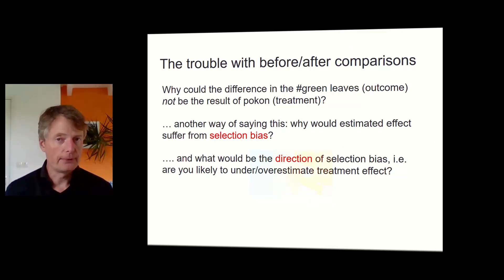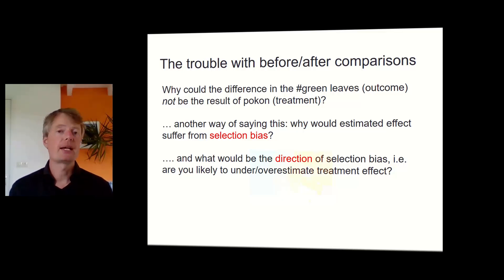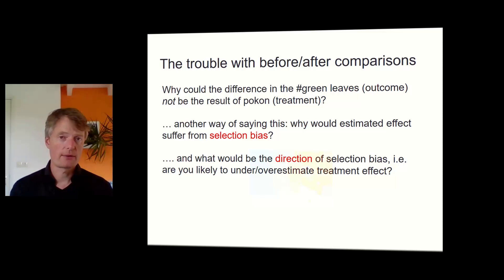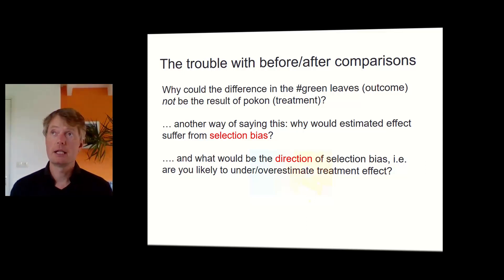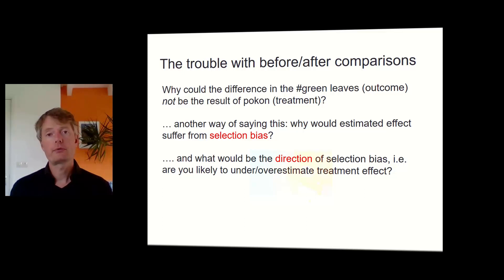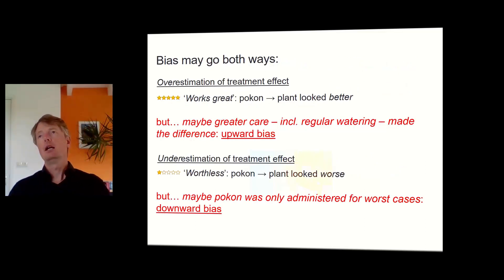You may feel this coming — the before-after comparison may not be the best way of inferring the effect of a treatment, because there may be selection effects going on. As a result, the estimated effect of the treatment may be biased. It's also interesting to think about the direction: am I likely to overestimate the effect of POCON on the number of green leaves, or am I likely to underestimate it? The bias may go both ways.